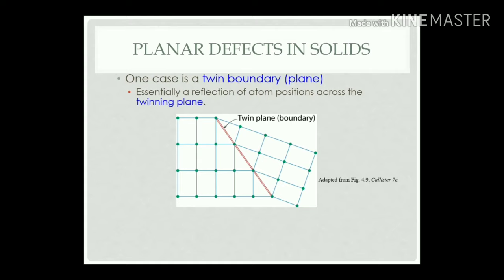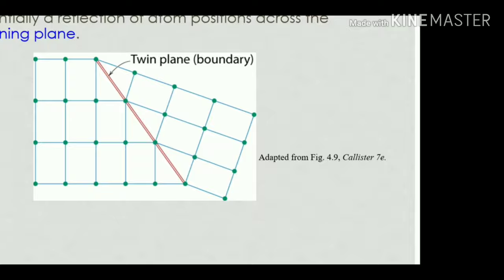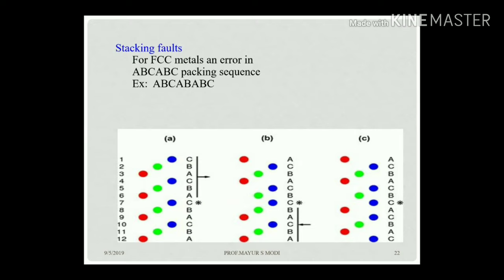Planar defects: if the top surface of a structure is damaged at a certain angle, that boundary is a twin boundary defect, showing essentially a reflection of atom positions across the twinning plane. A stacking fault defect occurs when a perfect structure has an ABC ABC sequence but a rearrangement produces an ABC AB BC sequence — that certain rearrangement of layers is called a stacking fault defect.